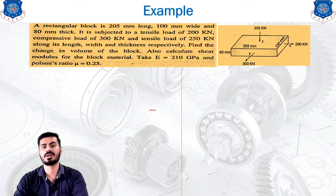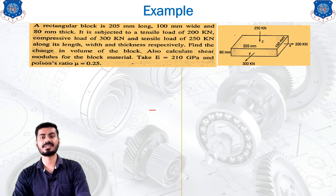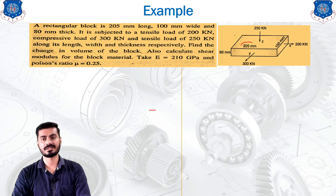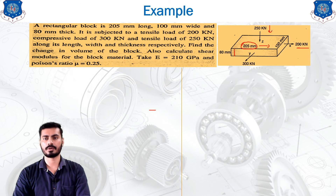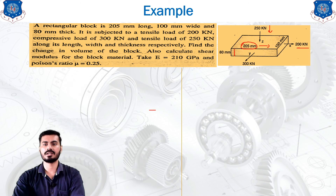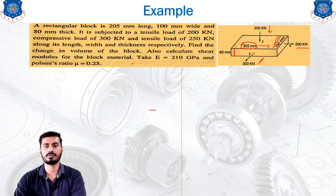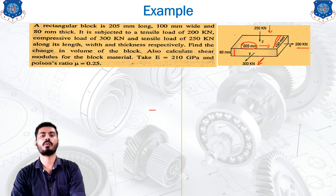The block is subjected to a tensile load of 200 kN, a compressive load of 300 kN, and a tensile load of 250 kN along its length, width, and thickness respectively. The 200 kN acts horizontally along the 205 mm length, the 250 kN compressive load acts vertically along the 80 mm thickness, and the 300 kN tensile load acts in the Z direction along the 100 mm width.